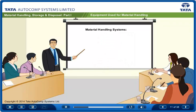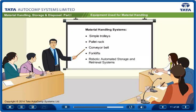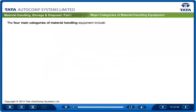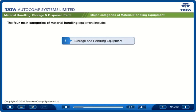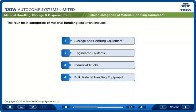What are the different equipment used for material handling? Material handling systems range from simple trolleys and pallet racks to complex conveyor belts, forklifts and robotic automated storage and retrieval systems, that is AS/RS. The four main categories of material handling equipment include storage and handling equipment, engineered systems, industrial trucks, and bulk material handling equipment.